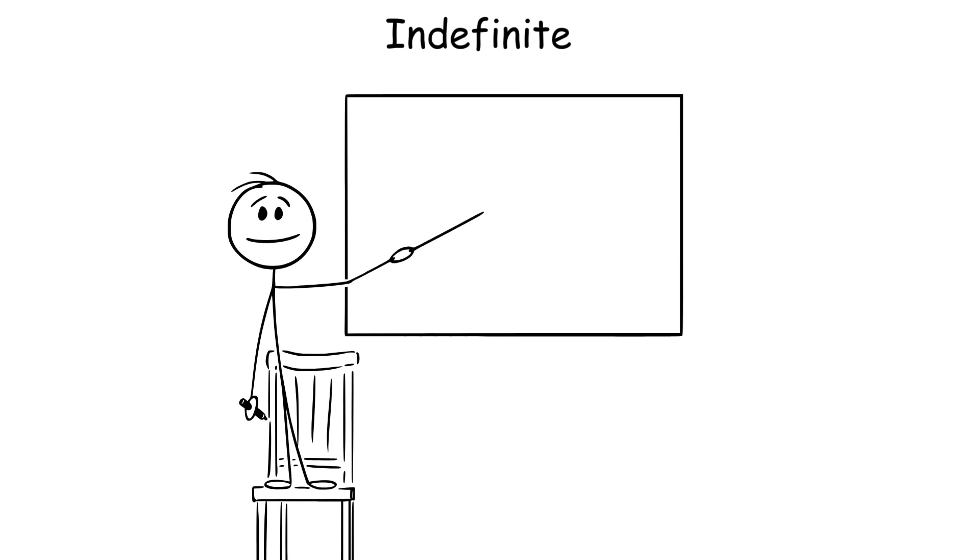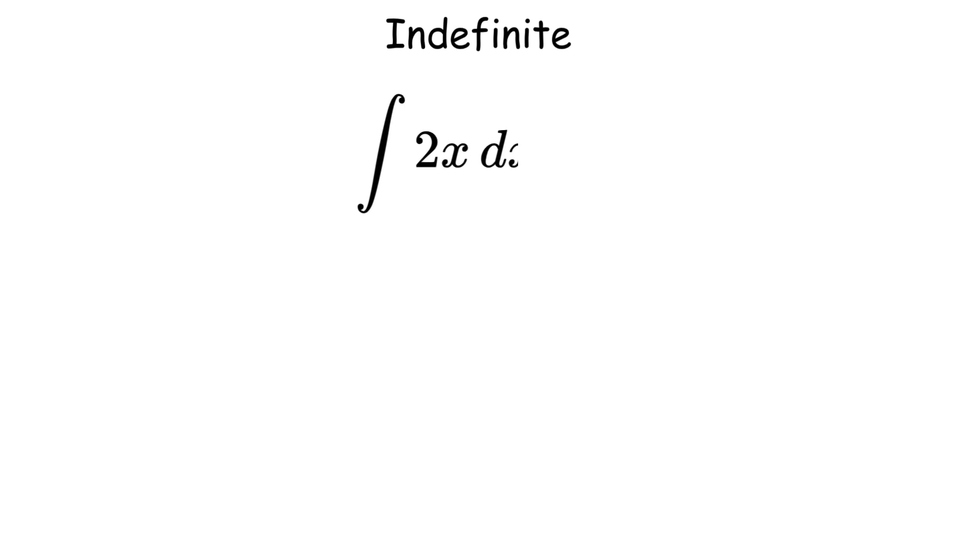Indefinite integral to find the antiderivative of a function, you simply reverse the process of differentiation. So if f of x equals 2x, then the indefinite integral is x squared plus c, where c is the constant of integration, because when you differentiate any constant, it becomes zero.